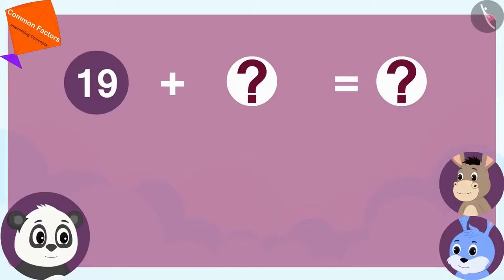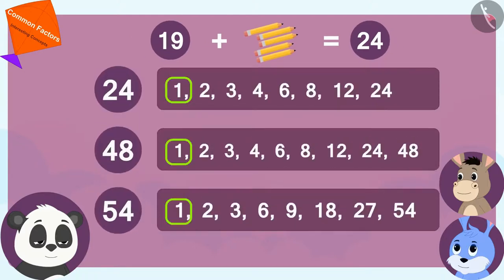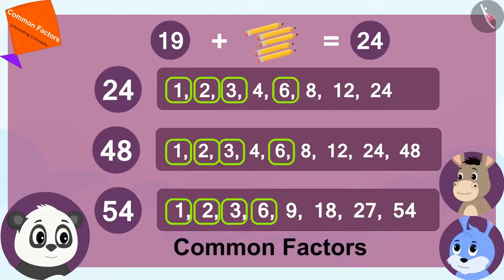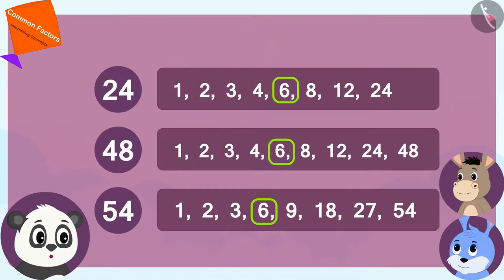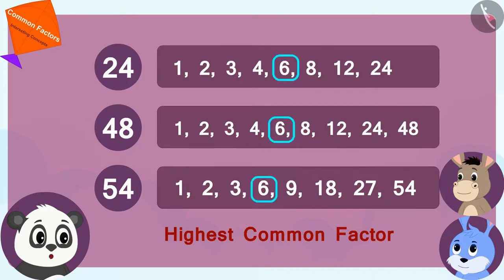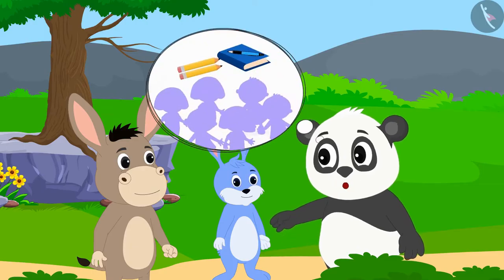Oh wow! If I add 5 pencils to 19, there will be a total of 24 pencils. The numbers 1, 2, 3 and 6 are the common factors of 24, 48 and 54, and 6 is their highest common factor. Therefore, we can distribute these things equally among 6 children.